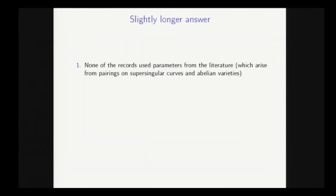So I guess a slightly longer answer is deserved. So the first point I would say is that all the records I just showed you, none of them actually arise or were attacking fields which arise from parameters in the cryptographic literature. So it kind of seemed mad to have all these new tools and algorithms, have all these parameters in the literature, and yet to declare everything dead without actually trying to attack a single one of them. So that was the first motivation.